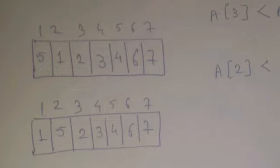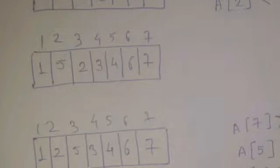Now check positions 2 and 1 — the numbers are 5 and 1, but 5 is greater than 1, so we swap. After swapping, 1 goes to position 1 and 5 comes to position 2. So the first iteration is complete, but the array is still not fully sorted.